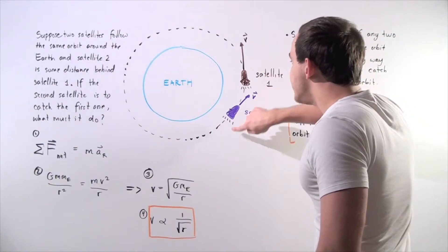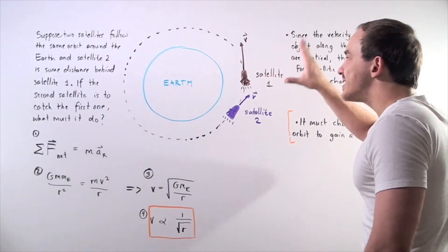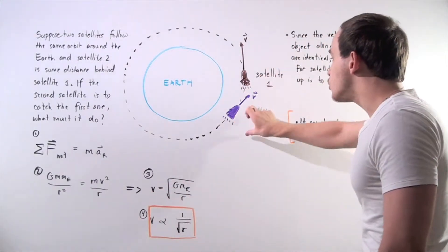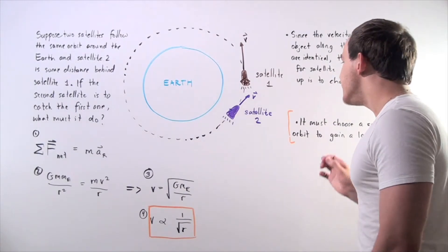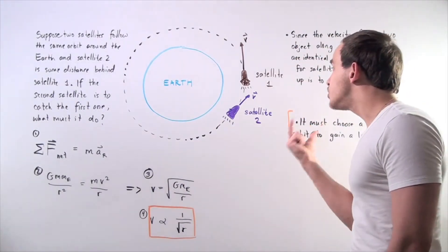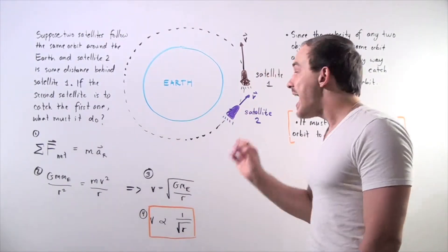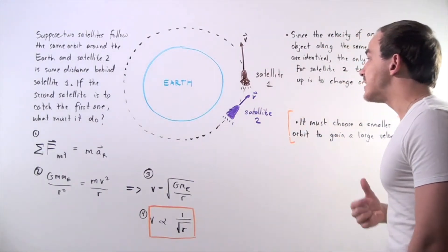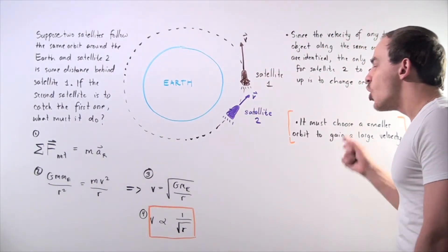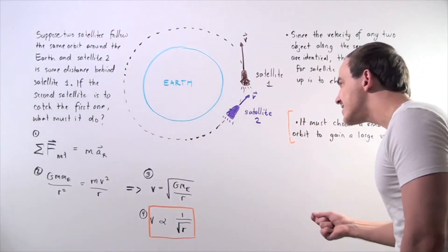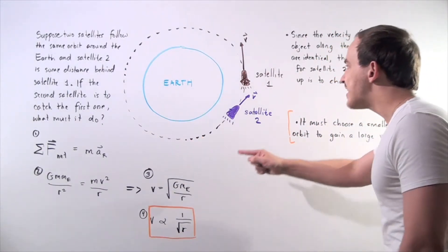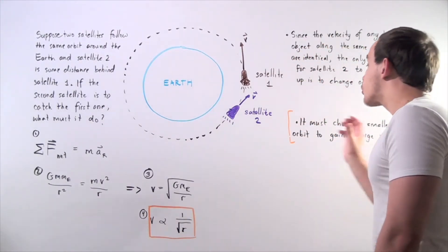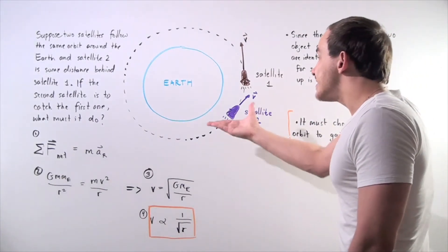Because these two satellites follow the same exact orbit with the same exact radius, their velocities are identical. That means there's no way satellite 2 will ever catch up to satellite 1 if it remains in the same orbit. In order to catch up, satellite 2 must increase its velocity — and the only way to do that is to decrease its orbital radius.